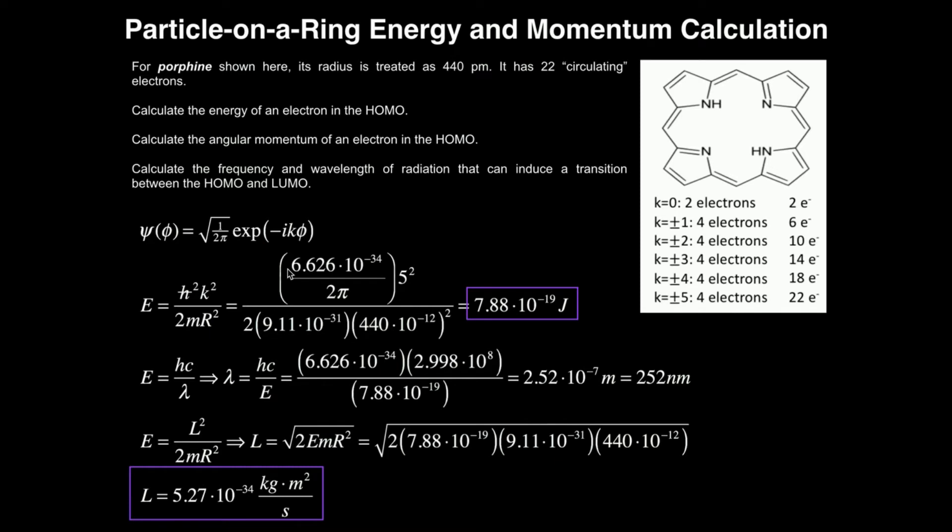H-bar, remember, is Planck's constant divided by 2 pi. 6.626 times 10 to the minus 34th divided by 2 pi. We just determined our K had to be five. That's the highest energy, the highest occupied molecular orbital electron, 22. So we use 5 squared. It doesn't matter if it's positive or negative because we're squaring it.